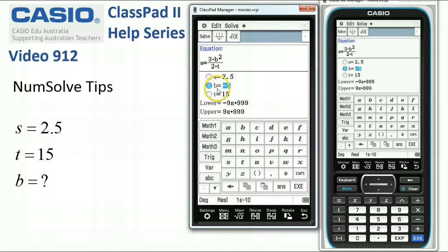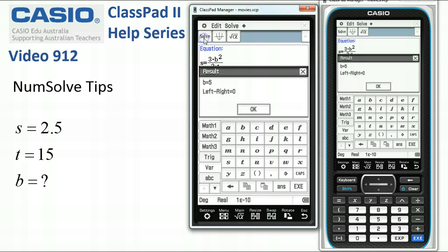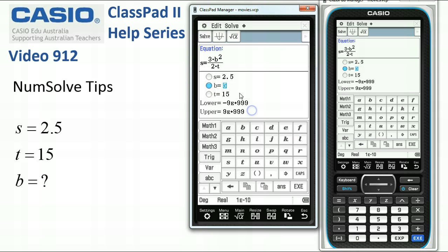So depending on what value is against the variable to start with, for instance, if I change it to 100 and tap solve, we're back to being the positive 5 solution. What the initial seed is can result in a different solution.